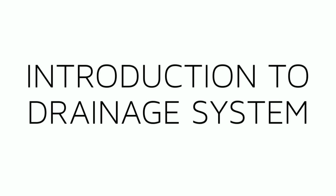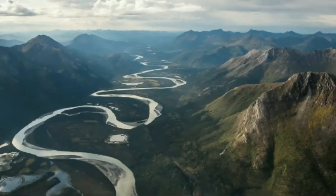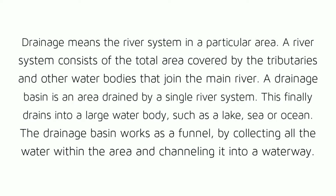Introduction to Drainage System. Drainage means the river system in a particular area. A river system consists of the total area covered by the tributaries and other water bodies that join the main river. A drainage basin is an area drained by a single river system, which finally drains into a large water body such as a lake, sea or ocean. The drainage basin works as a funnel, by collecting all the water within the area and channeling it into a waterway.